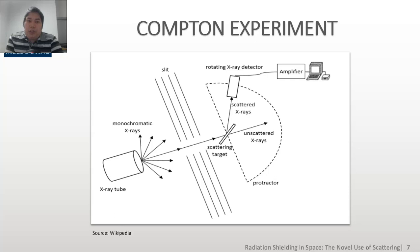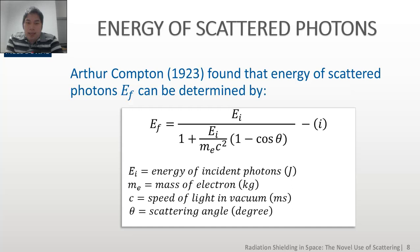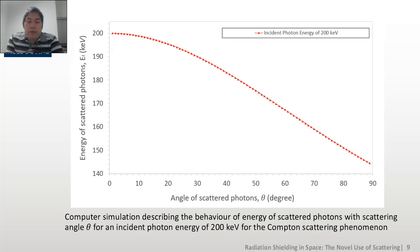Second, we have based our calculation on the Compton experiment, where monochromatic X-rays with energy of around 200 keV generated from an X-ray tube passes through a slit before interacting with the scattering object. The energy of the scattered photons EF is measured using a rotating X-ray detector mounted onto a protractor. Using the relationship of scattering energy and the scattering angle theta discovered by Compton, Arthur Compton in 1923, a graph of energy of scattered photons EF and an angle of scattered photons theta is plotted for an incident photon energy of 200 keV, and this graph was generated in Excel.